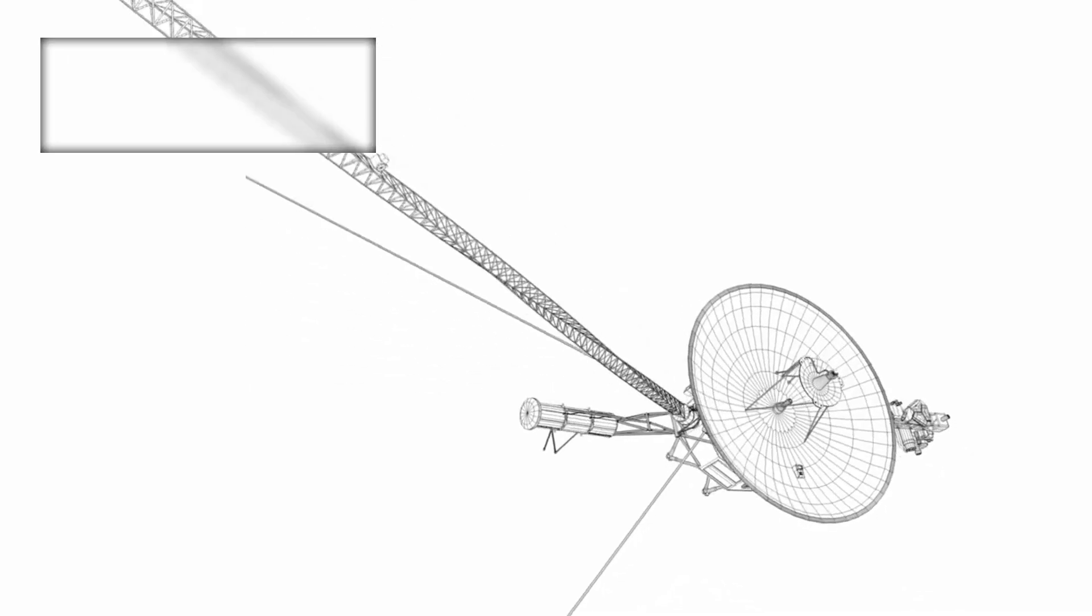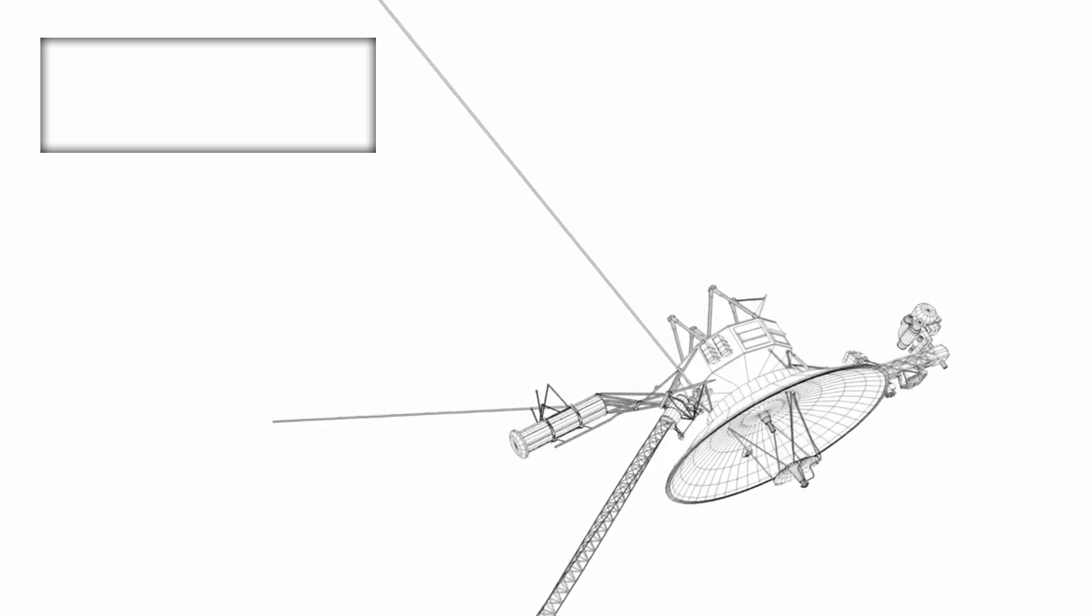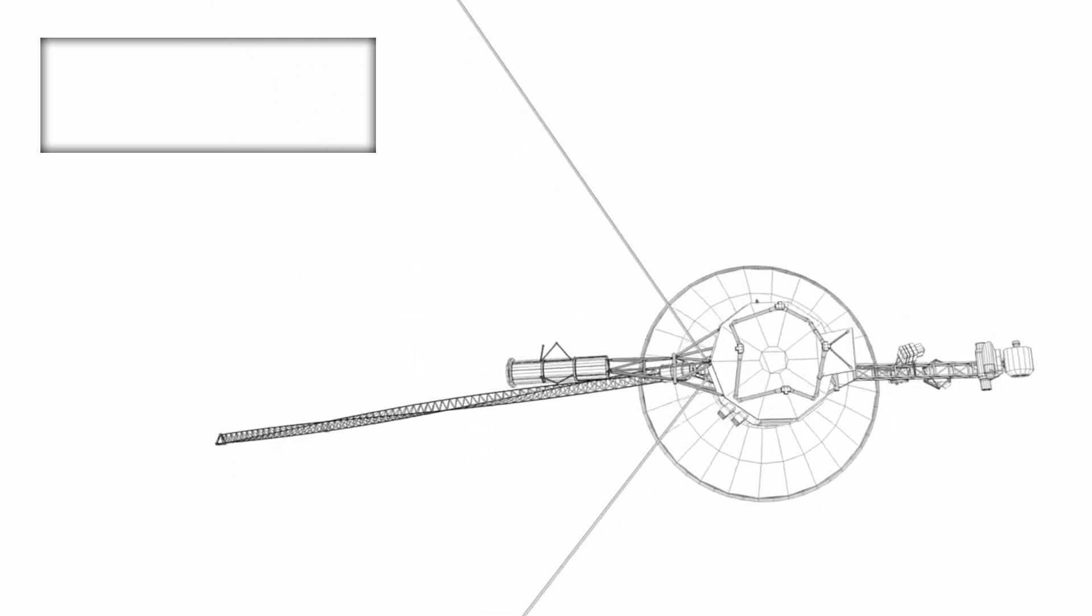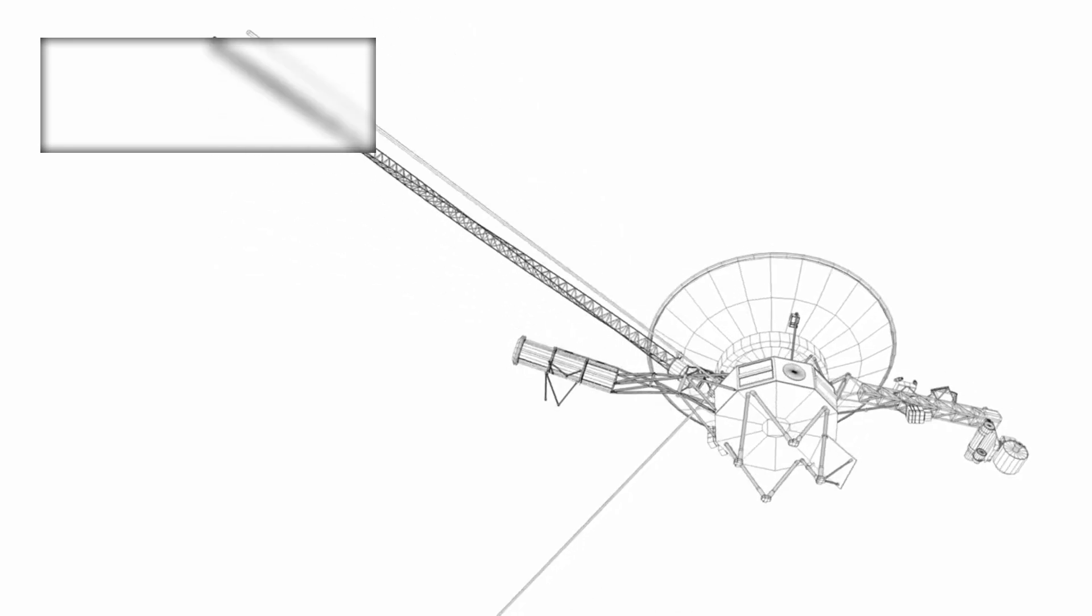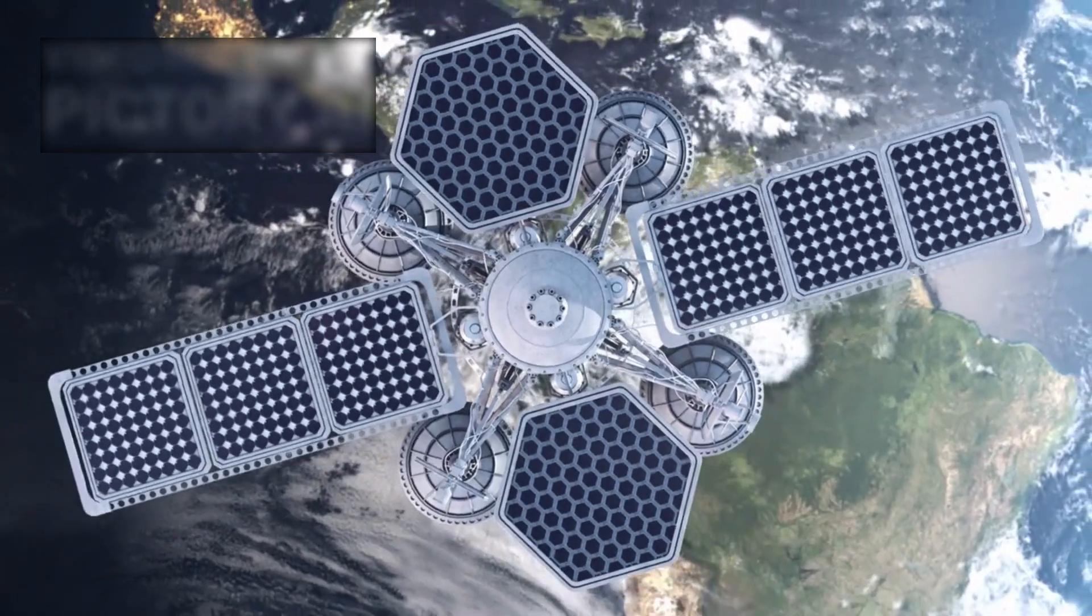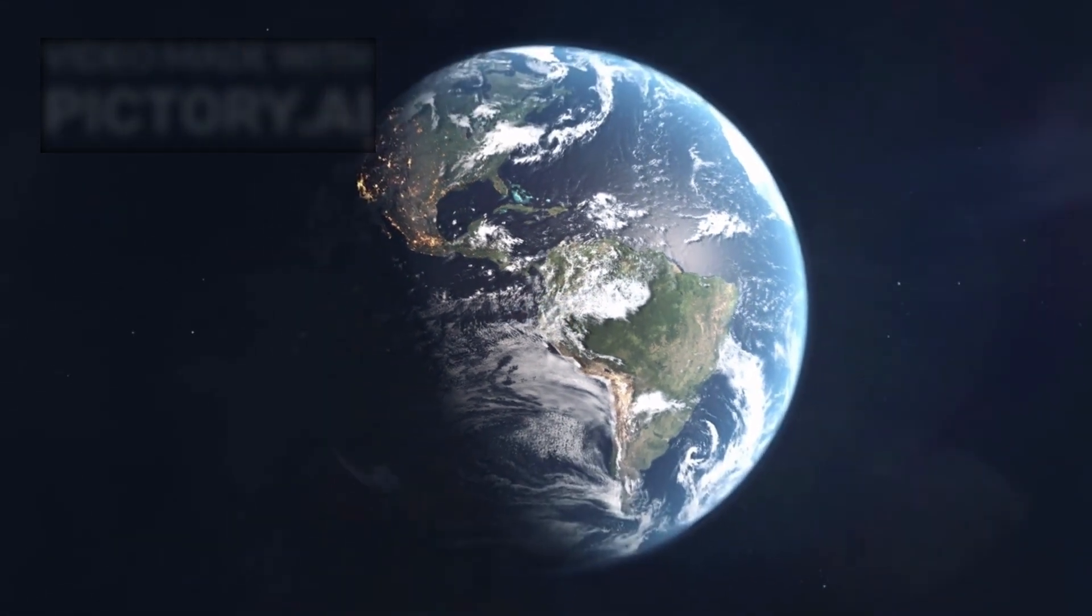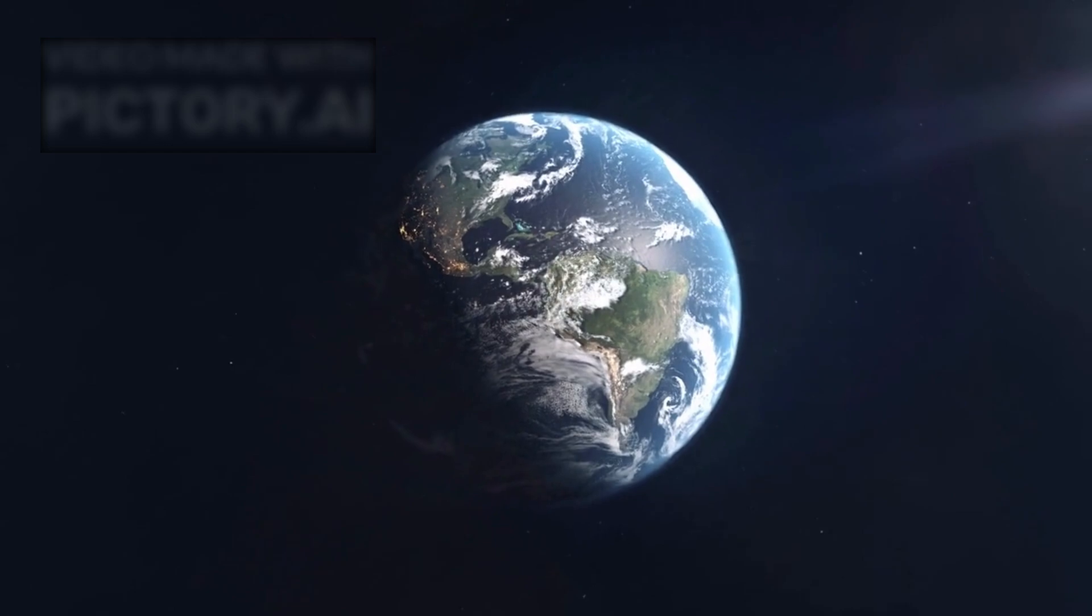It's worth remembering that Voyager 2 carries with it the famous golden record, a copper disk containing sounds and images selected to portray the diversity of life and culture on Earth. Encoded on the record are greetings in 55 languages, music from across the globe, and diagrams that describe the location of our planet in relation to pulsars in our galaxy. Could it be that this message has finally been found? Perhaps something, or someone, capable of detecting and decoding electromagnetic signals found Voyager 2's greeting and decided to respond in kind?